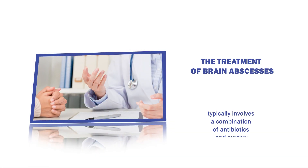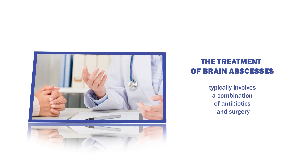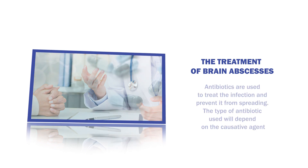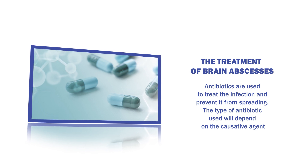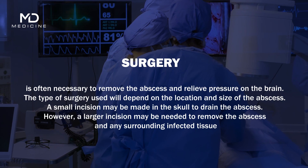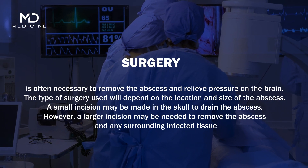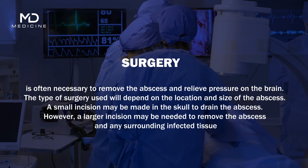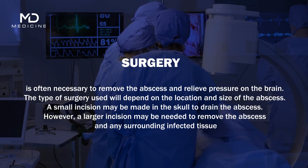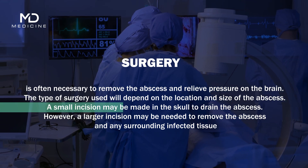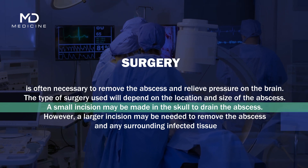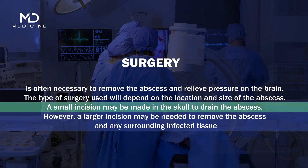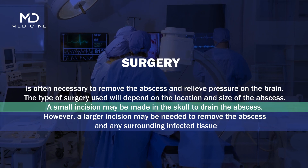The treatment of brain abscesses typically involves a combination of antibiotics and surgery. Antibiotics are used to treat the infection and prevent it from spreading, with the type depending on the causative agent. Surgery is often necessary to remove the abscess and relieve pressure on the brain. A small incision may be made in the skull to drain the abscess; however, a larger incision may be needed to remove the abscess and any surrounding infected tissue.